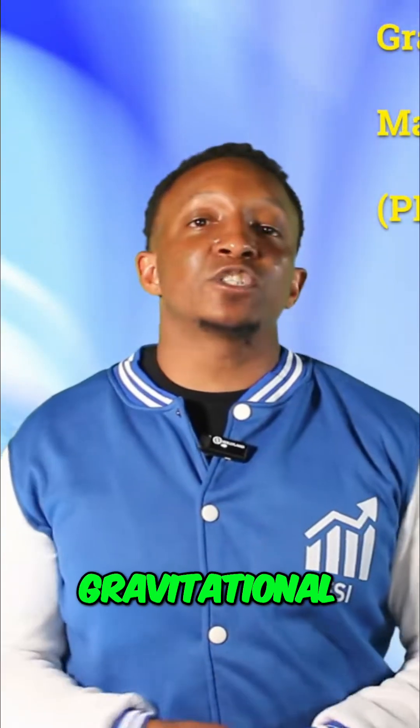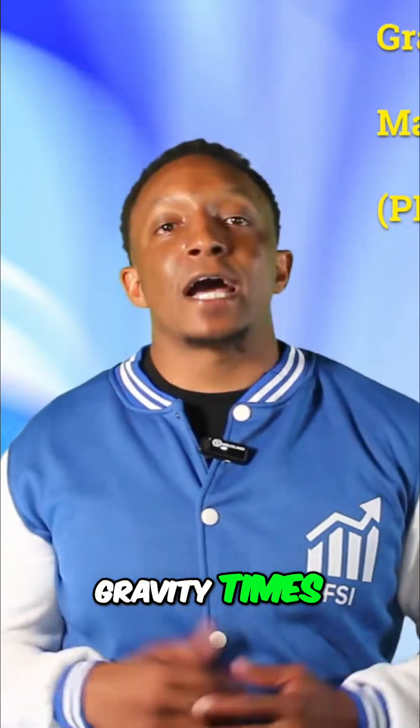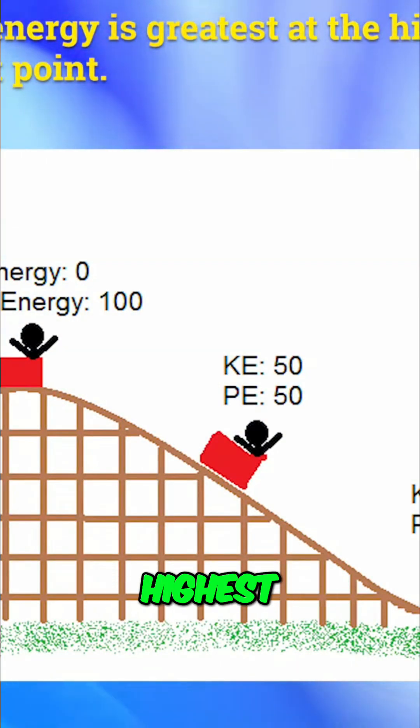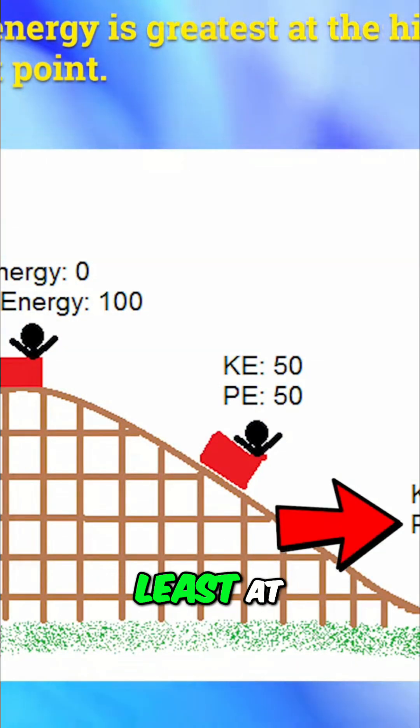So basically, gravitational potential energy equals mass times gravity times height. Gravitational potential energy is greatest at the highest point of a roller coaster and least at the lowest point.